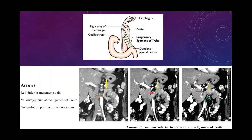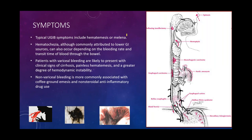Venous causes are usually due to portal venous hypertension — things like cirrhosis, Budd-Chiari syndrome, or splenic vein thrombosis. The ligament of Treitz is the anatomical landmark characterizing everything proximal as upper GI bleeds. It can be challenging to identify on diagnostic imaging; here is our jejunum transitioning from the duodenum at the ligament of Treitz area.